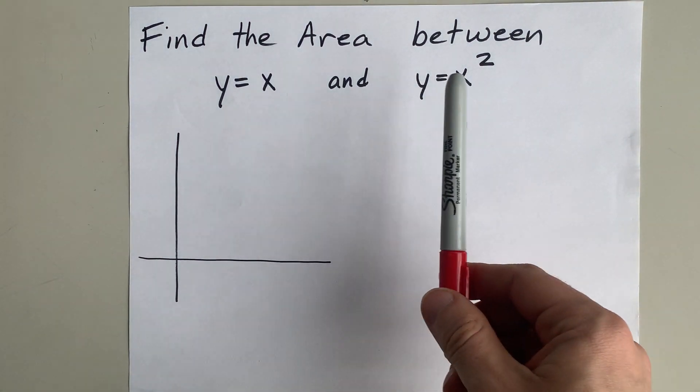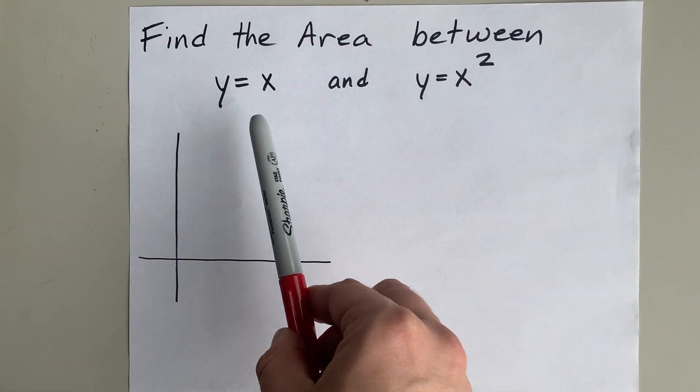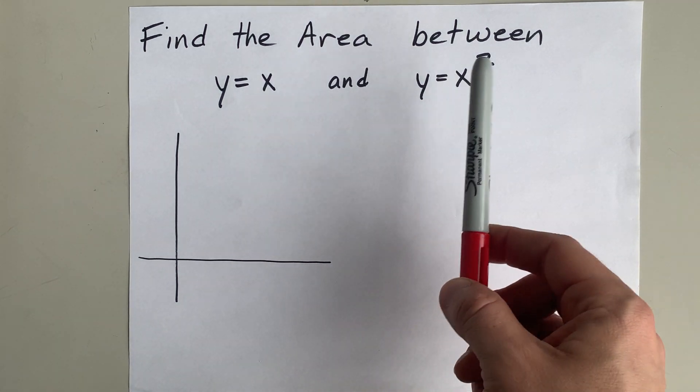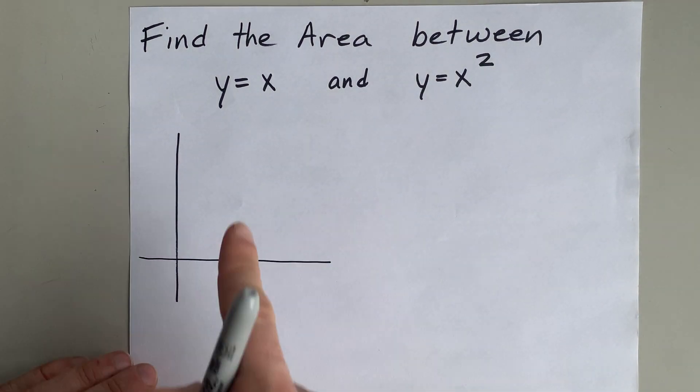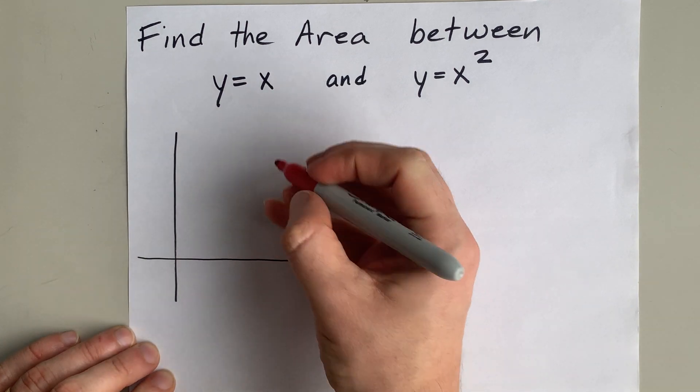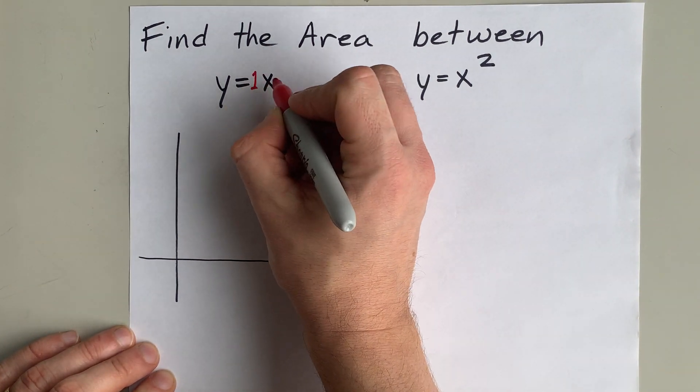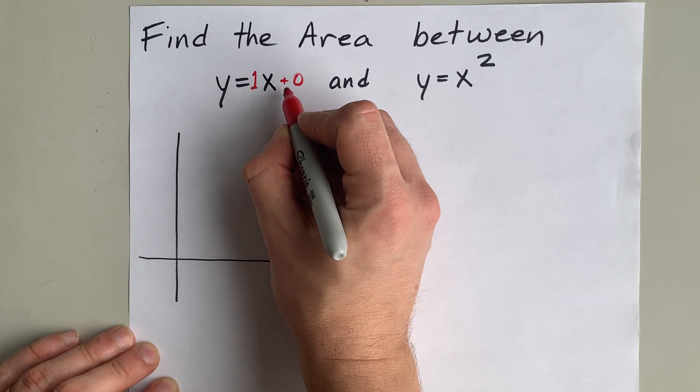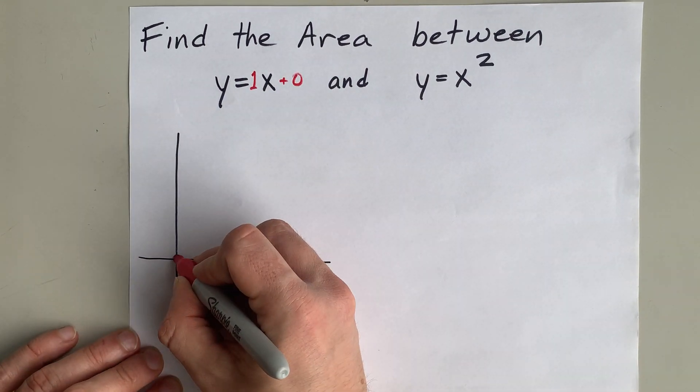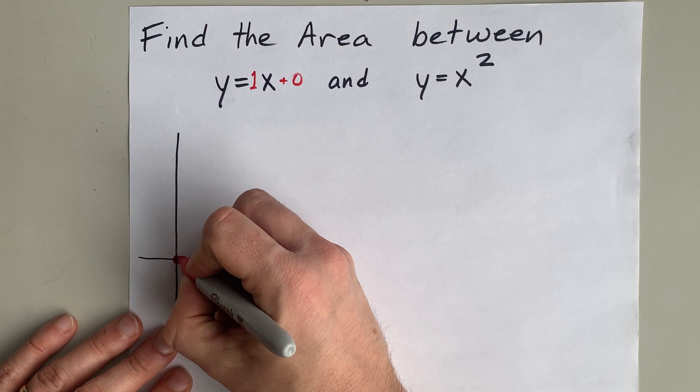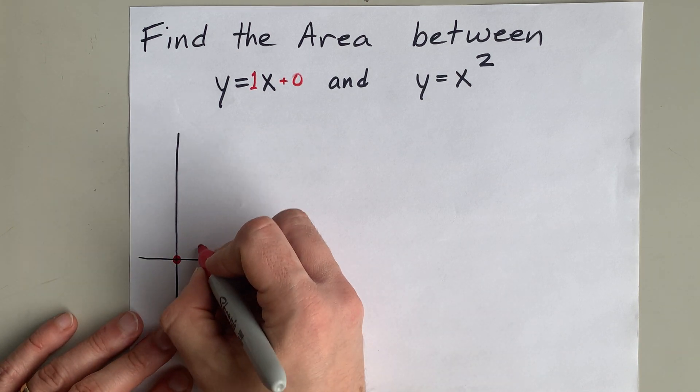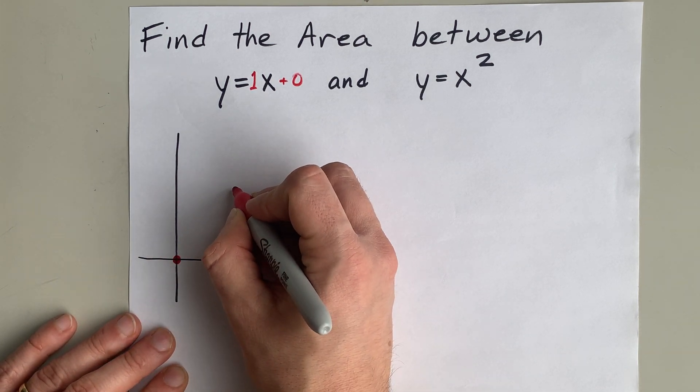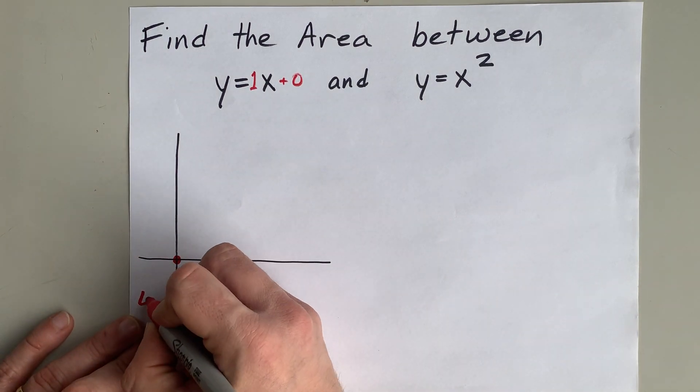We're going to find the area between the two curves y equals x and y equals x squared. Now y equals x is a line. This is y equals 1x plus 0 if you really want it in mx plus b form. That's a y-intercept of 0 and a slope of 1, so it goes over 1, up 1, over 1, up 1, over 1, up 1 to generate new points.